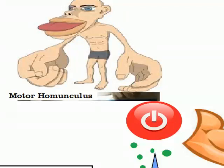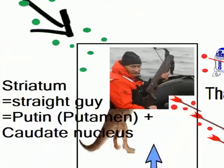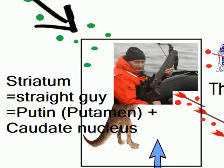This guy is Mr. Homunculus, which basically represents the motor cortex. His problem is that he has to make a movement — he has to lift a weight — but he cannot do it on his own; someone has to push the power button. Here we have a straight guy whose name is Striatum.